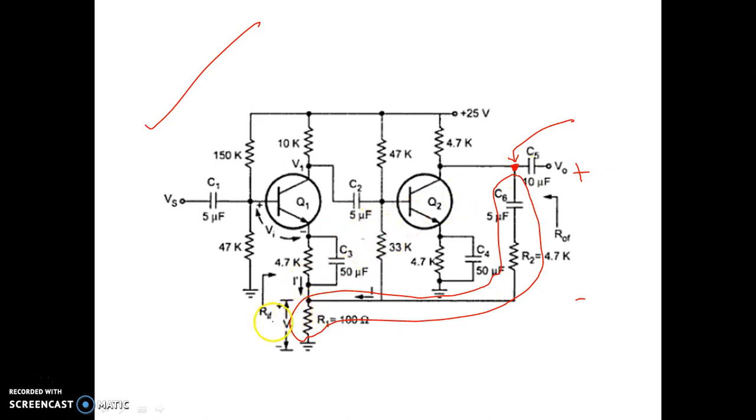Now see the mixing network. Across the 100 ohm resistor, we are taking the feedback voltage VF. To determine the VI, that is the input voltage for this two-stage amplifier, we have to apply KVL in this input loop. Then only we can understand the effect of the feedback voltage in the input loop. We cannot apply KCL here because KCL will not give us any idea, but KVL will give us the idea of how the feedback voltage is affecting the input voltage for this amplifier.